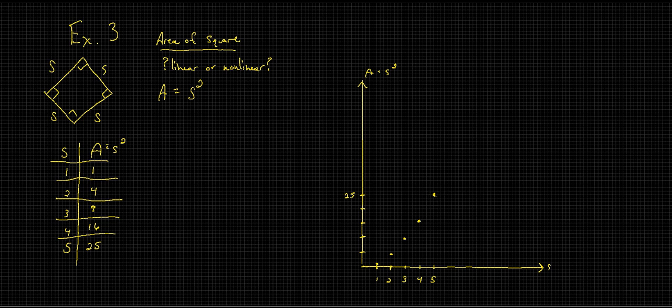And at 5 the area is going to be 25 units squared, which is right about here. And you can already tell that there is a curvature in there—it's just going to keep on going up this way. And we can tell from this graph that A equals s squared, we should already know it's not linear because of the way the equation looks.